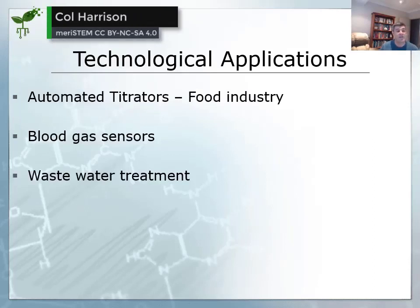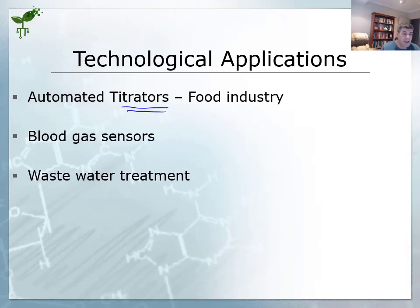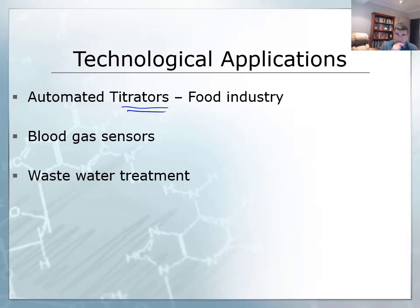The final area to look at is technological applications. One thing we are aware of when carrying out titrations is the labor-intensive manner of the process and the fact that it is a very precise technique — it's very hard to hit exactly that equivalence point or end point. As a result, there are a number of technological devices that can now be used to automate the titration process.